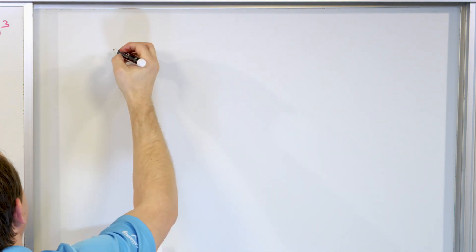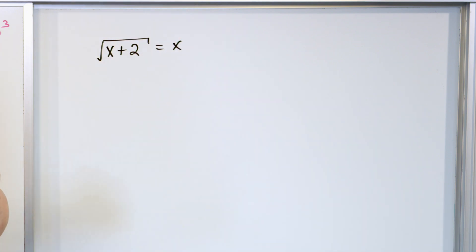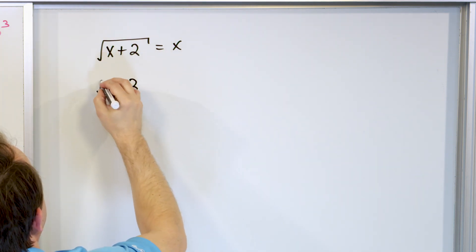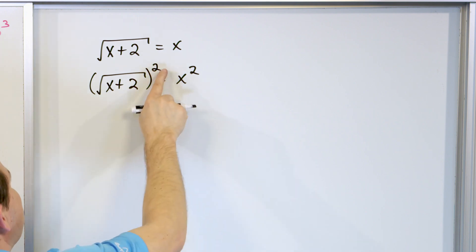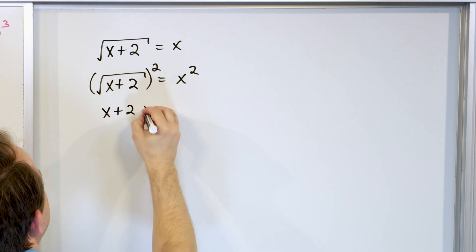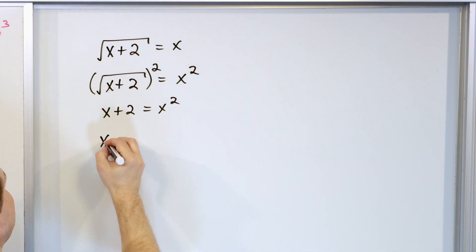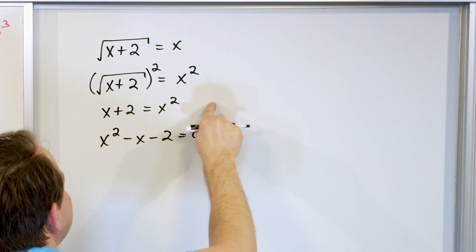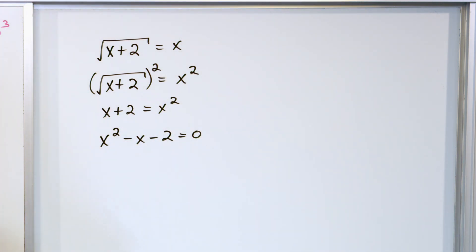Let's take a look at the next one. x plus 2, take the square root of it, equals x. I want to undo the radical — it's already on one side — so I'm going to square both sides. When I square a square root, I'll have x plus 2 left over on the left. On the right, I'll just have x squared. Now I collect all the terms by moving them to the right-hand side: x squared minus x minus 2 equals 0, because I subtracted the x and subtracted the 2.